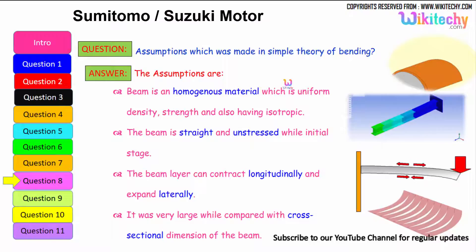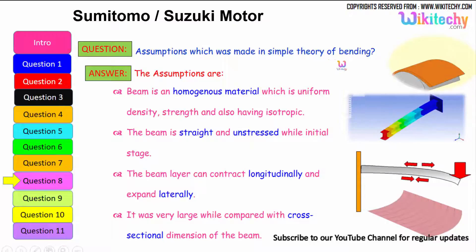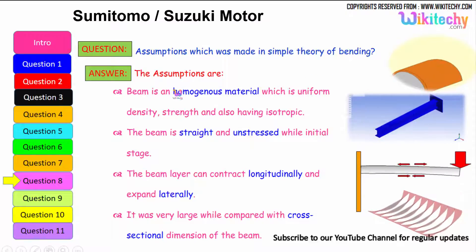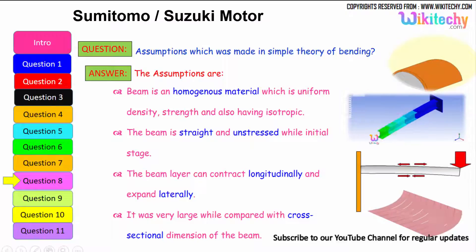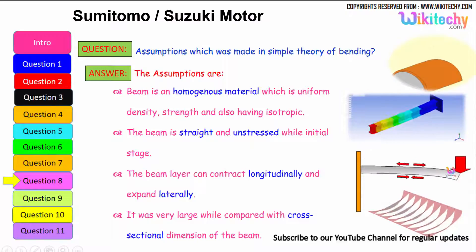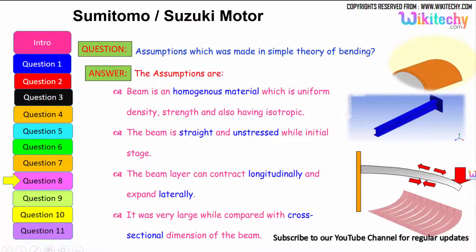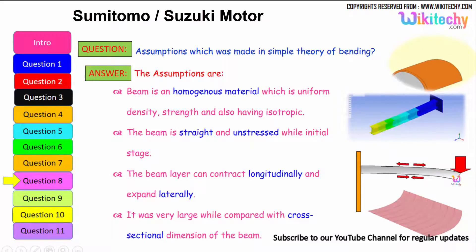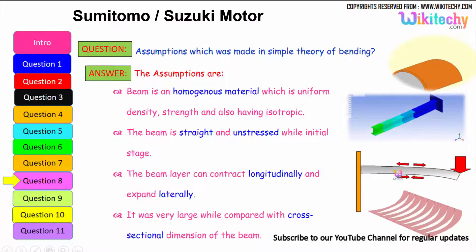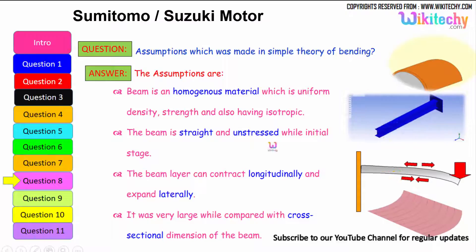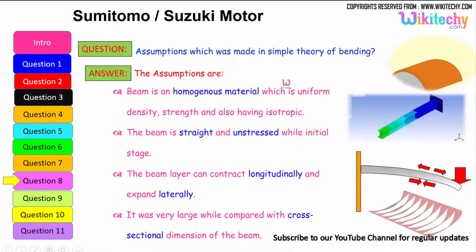What are the assumptions made in the simple theory of bending? The assumptions are: the beam is a homogeneous material of uniform density and strength, and is also isotropic. The beam is straight and unstressed at its initial stage. The beam can contract longitudinally and expand laterally, and its length is very large when compared with the cross-sectional dimensions of the beam.